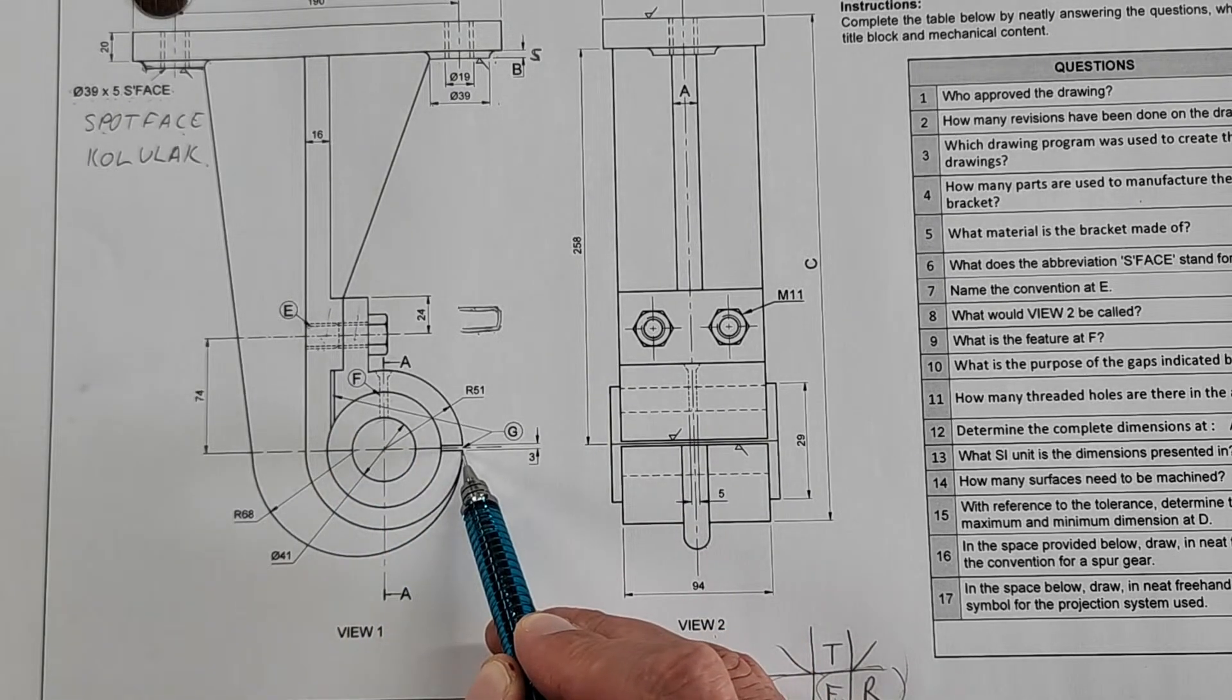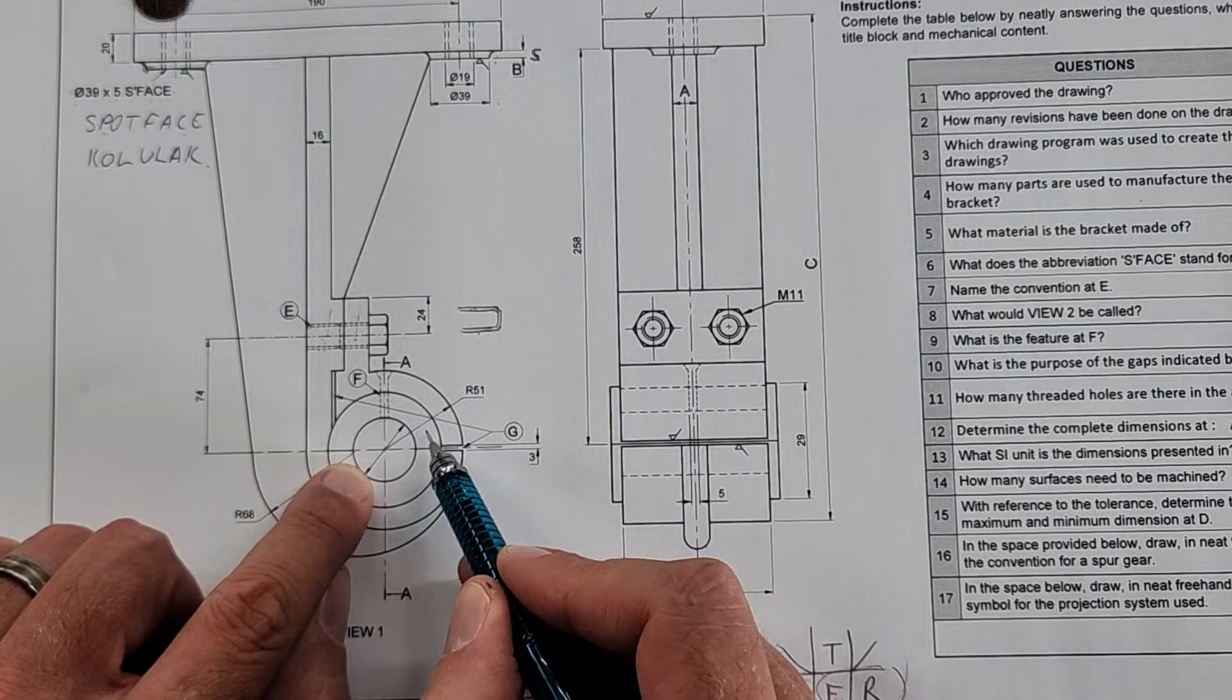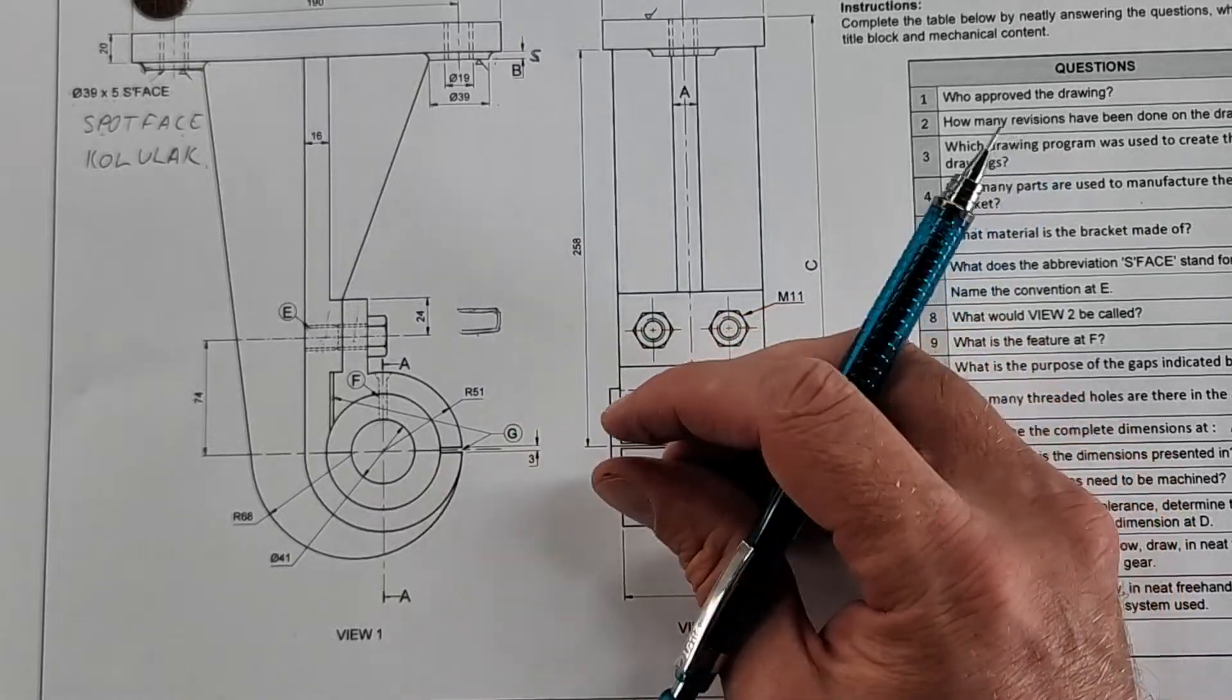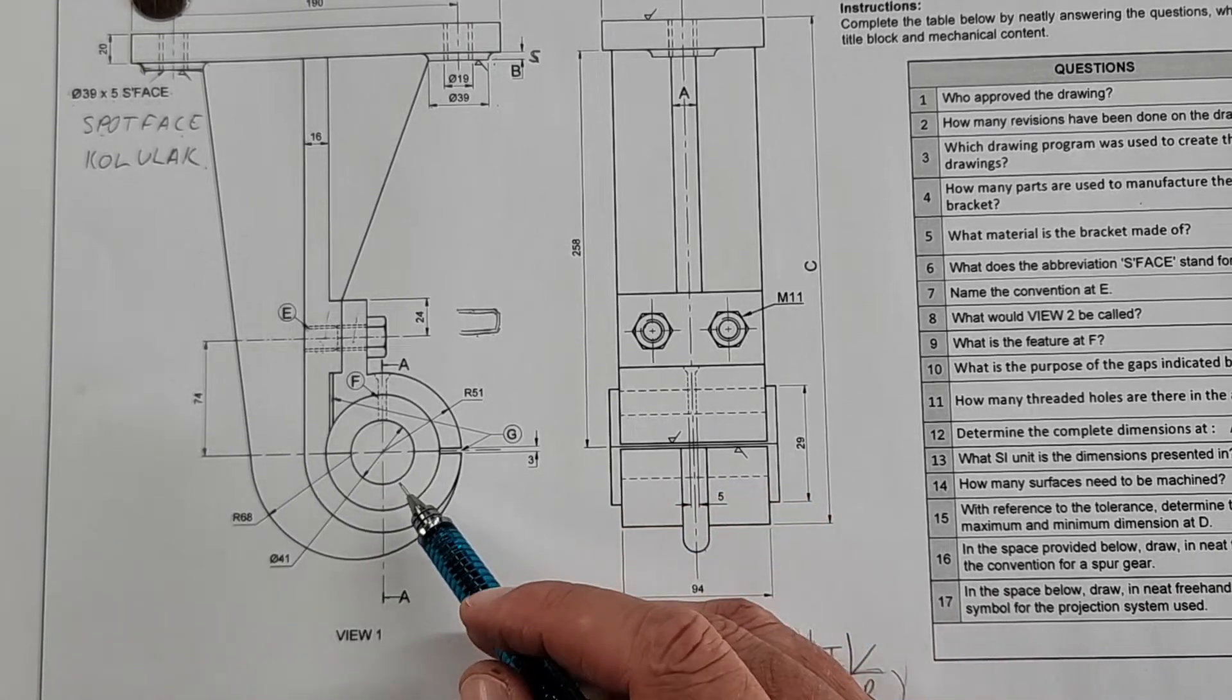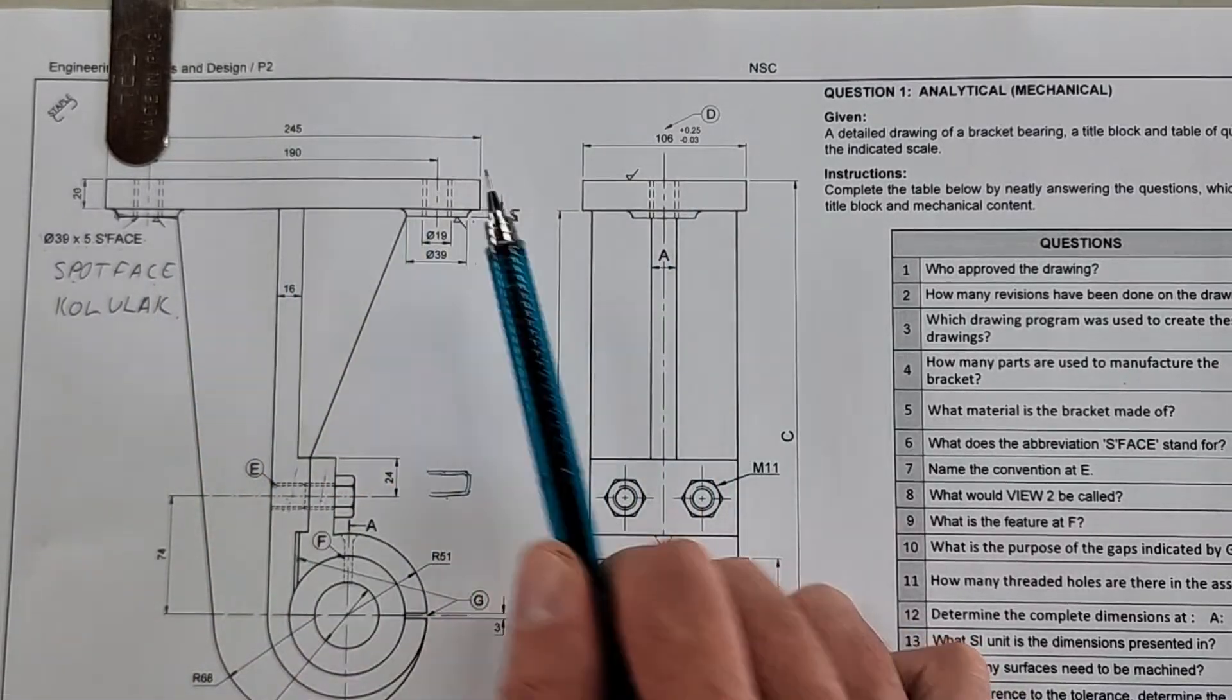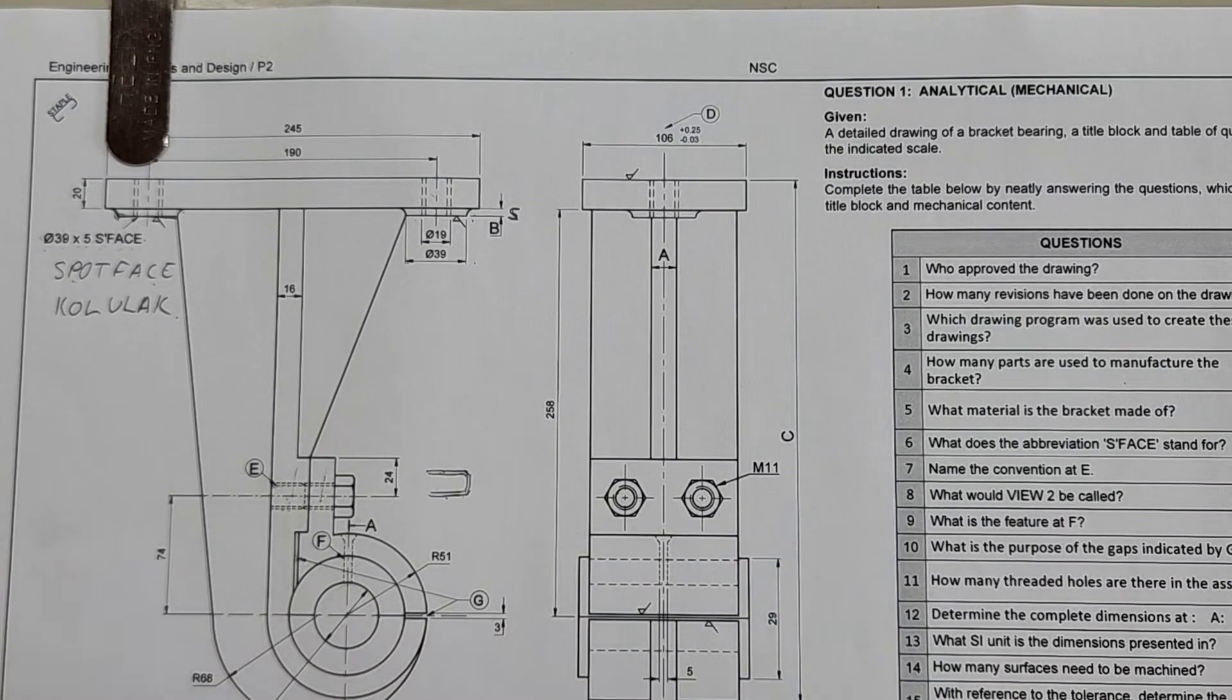Question ten: what is the purpose of the gaps indicated by G? There it is - this one and that one there. Let's say for instance this bracket is assembled, that is a tolerance for maybe the size of the shaft or the bush. When we clamp it, when we tie it down, there's a little bit of movement there, a tolerance between the parts. As I tighten it, that might get smaller there. So there's some tolerance there. Question eleven: how many threaded holes are there in the assembly? Here we have our one and two. Remember this is a view of the same two holes, and here we can see them but there's actually two. So it's four in total - one, two, three, and four. Four threaded holes.